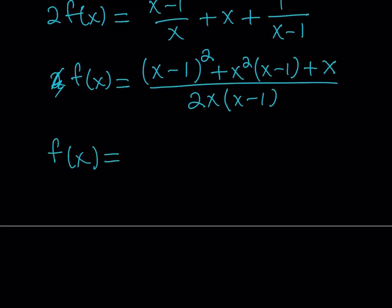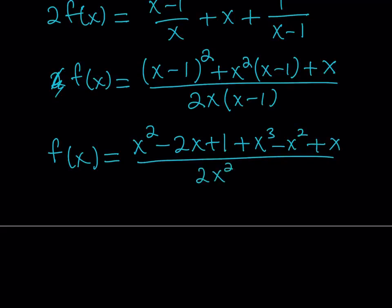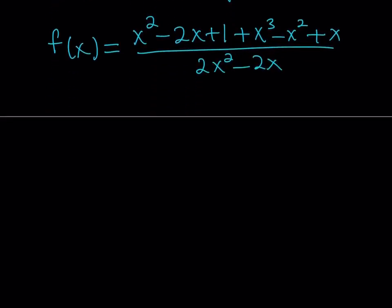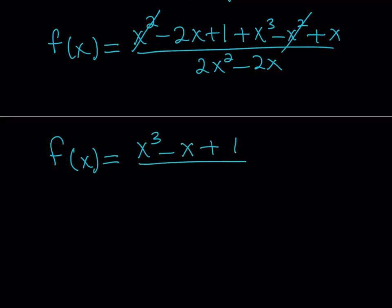So f(x) equals the simplified expression. Expanding (x-1)² gives x²-2x+1, and distributing gives x³-x². Combining terms over 2x²-2x: the x² terms cancel, leaving us with f(x) = (x³ - x + 1) / (2x² - 2x).